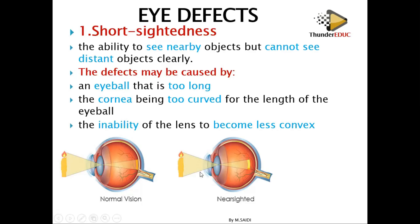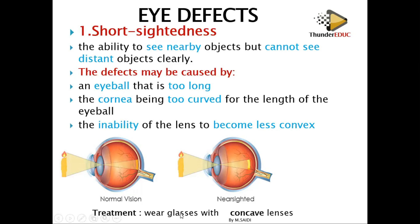If the cornea in front is too curved, it bends the light more, and by the time it reaches the lens it's already bent too much, forming the image in between. Or if the lens cannot become less convex, it remains large and refracts the light with high power, so the image forms in between and does not reach the retina.